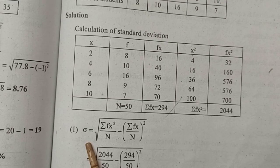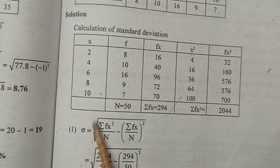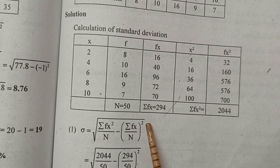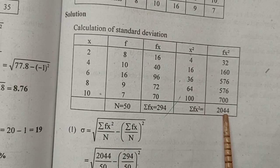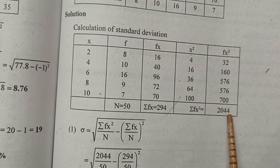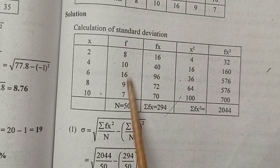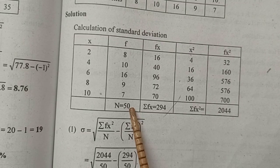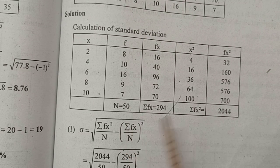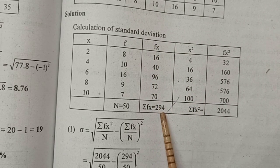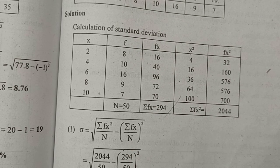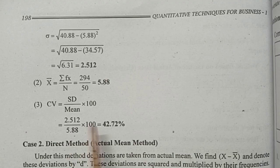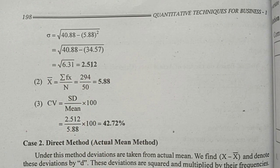Apply the formula: sigma equals square root of sigma f times x-squared divided by n, minus sigma fx divided by n, the whole squared. After substituting and simplifying, the standard deviation is approximately 3.512.